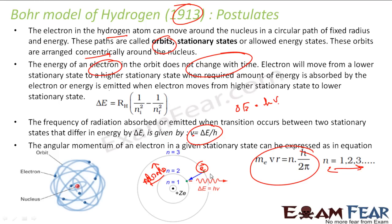Please note, the orbit concept is wrong — it does not exist in reality. This was just a concept by Bohr. We still study this because it makes it easy to understand the atom, since the quantum model is a little complex to understand, but this model is still incorrect.